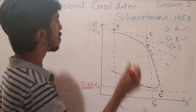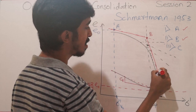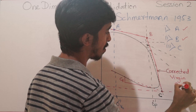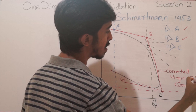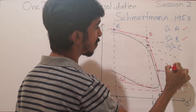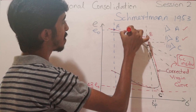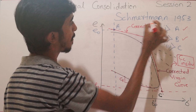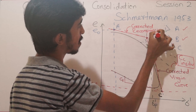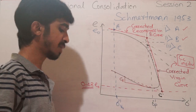Drawing these connections in red: the line from A to B is the corrected recompression curve, and the line from B to C is the corrected virgin curve. The gradient of the corrected virgin curve (B to C) is the in-situ C_c, and the gradient of the corrected recompression curve (A to B) is C_r. We now have distinct straight lines that make it easy to work out settlement problems.